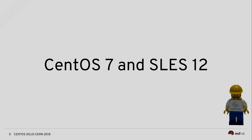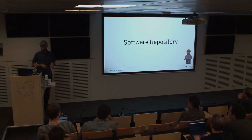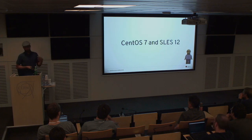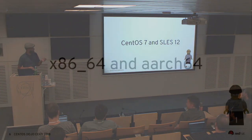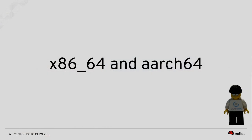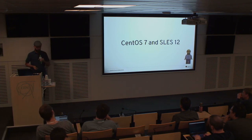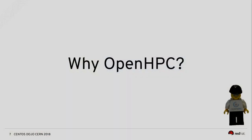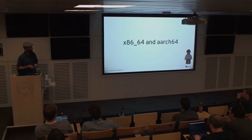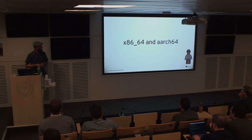I want to start with what is OpenHPC. At first look, it seems to be a software repository which you can use with Yum and Zypper, which means it's for CentOS 7 and SLES 12. Looking at the usage statistics, it's interesting to see that around 95% of users are using CentOS, so it's very much focused on CentOS. The available packages are for x86-64 and ARM-64 architectures, and ARM usage is low — between 1 and 10% depending on the month.